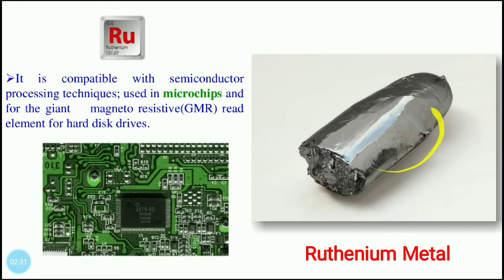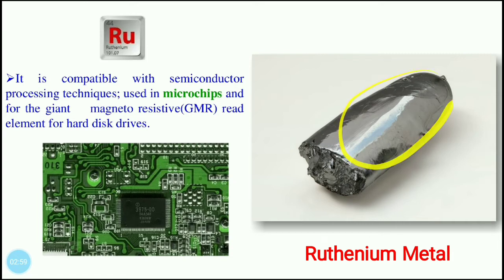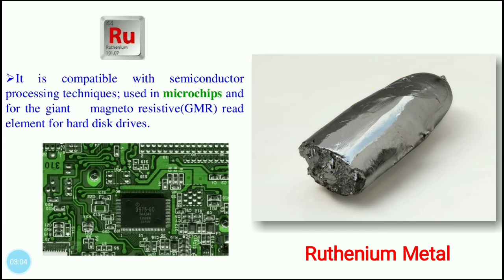Ruthenium is compatible with semiconductor processing techniques, so it finds use in microchips and for giant magnetoresistive read elements in hard disk drives. This is how it looks — a shiny metal with luster, as we have already studied.